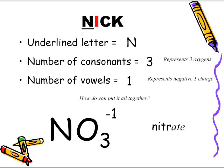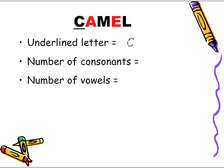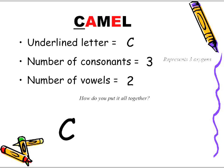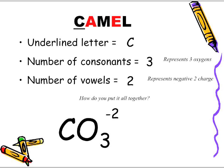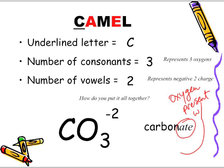Next example — "camel." The underlined letter is C. Number of consonants: three. Number of vowels: two. We start with C; three consonants means three oxygens: CO3. Two vowels means two negative charges: CO3 negative two. It's a derivative of carbon, and with the A-T-E ending it's called carbonate. We don't make reference to the oxygen — the A-T-E ending tells us oxygen is present with whatever element is in front of it.